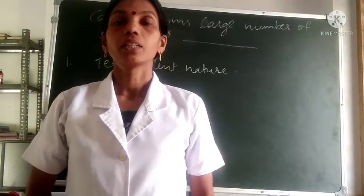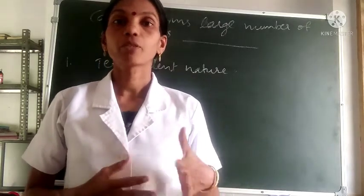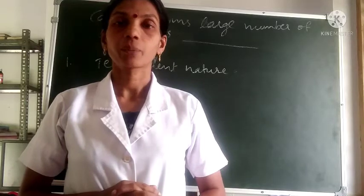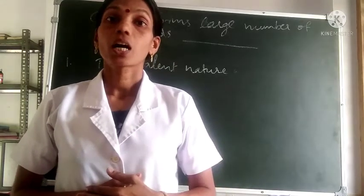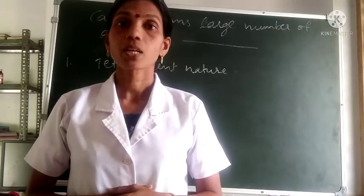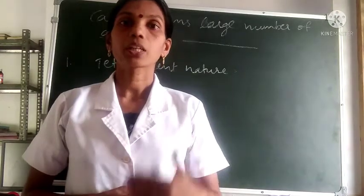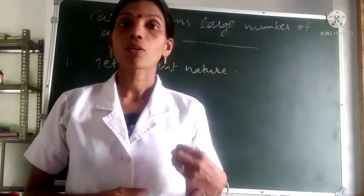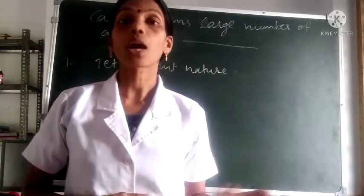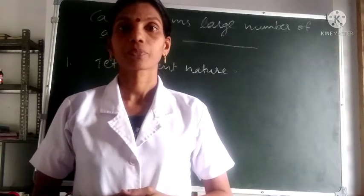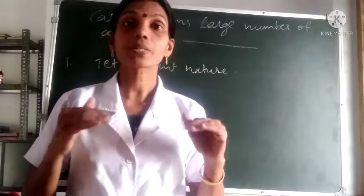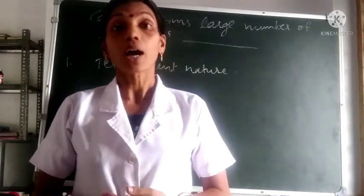Good morning students. In the previous video we have discussed about the differences between covalent compounds and ionic compounds. Now we have already studied that carbon forms compounds by sharing its electrons, and these compounds are known as covalent compounds. The number of compounds formed by carbon is greater than the number of compounds formed by all other elements.